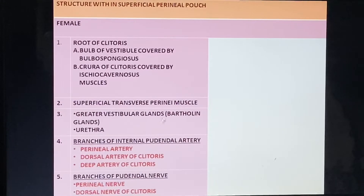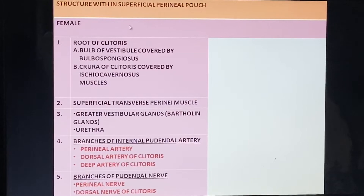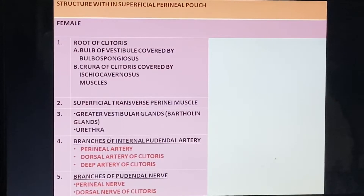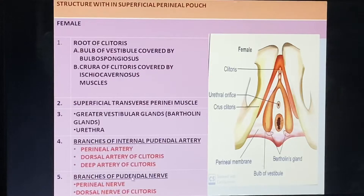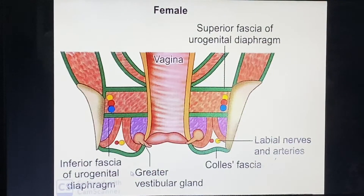In females, the structures in the superficial perineal pouch are: root of the clitoris with the bulb of the vestibule and crura of the clitoris, superficial transverse perinei muscle, greater vestibular gland, and branches of the internal pudendal artery and pudendal nerve.